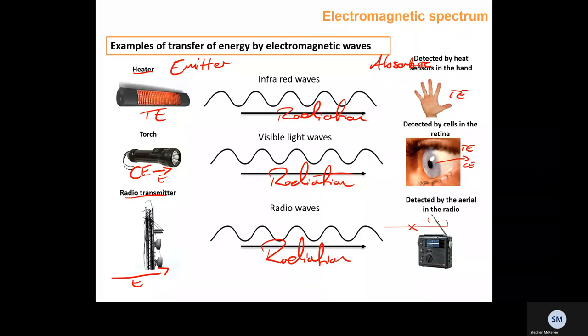A radio transmitter uses electrical energy — an electrical transfer goes into the radio emitter, which converts it into a radiation transfer of radio waves. That radiation transfer is then converted by the antenna or aerial in the radio into an electrical transfer, which is then converted into sound waves coming out of the radio.